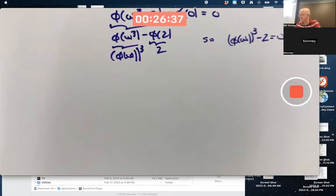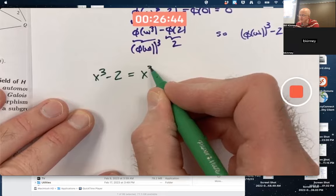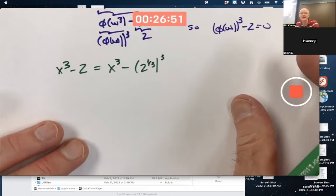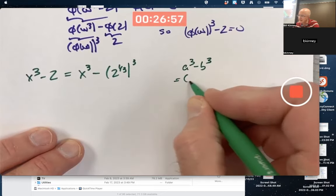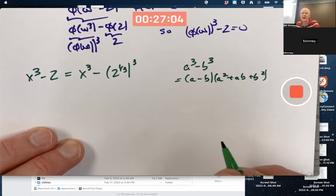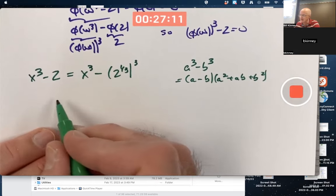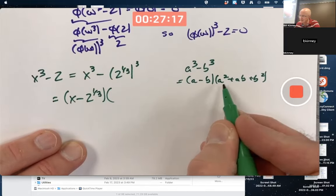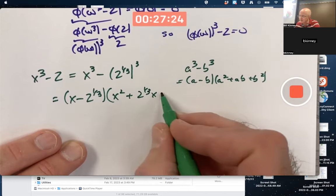Probably the simplest way to explain what they are is to realize you can think of this as the difference of 2 cubes. And we know anytime we've got the difference of 2 cubes, you can always factor it. a cubed minus b cubed is a minus b times a squared plus a b plus b squared. In this case, a is x and b is 2 to the 1/3 power. I can factor this as a minus b times x squared plus 2 to the 1/3 times x plus 2 to the 2/3.